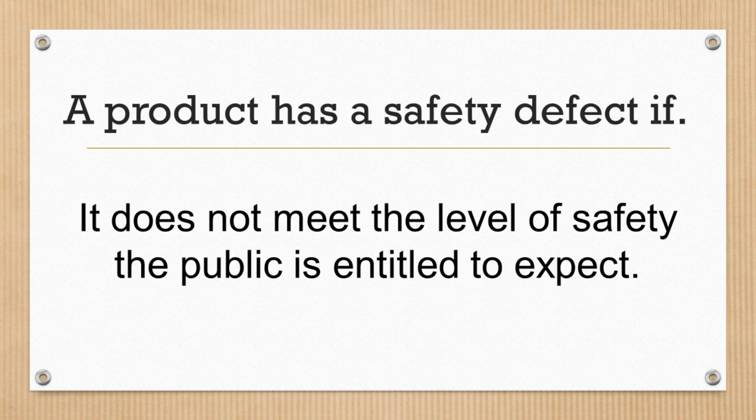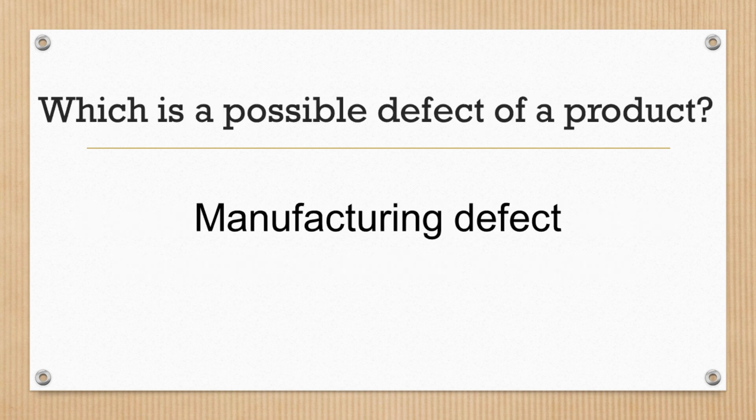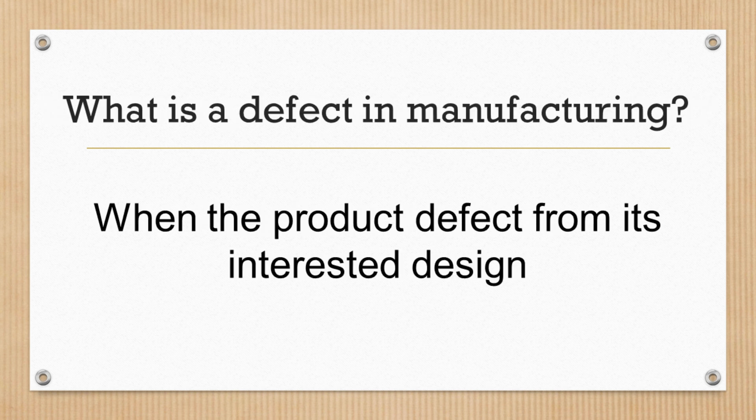A product has a safety defect if it does not meet the level of safety the public is entitled to expect. Which is a possible defect of a product? Manufacturing defect. What is a defect in manufacturing? When the product departs from its intended design.